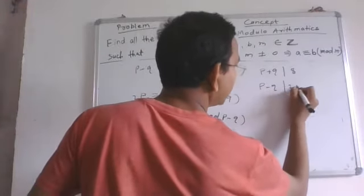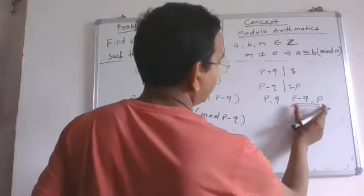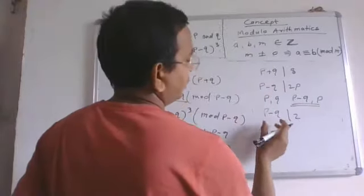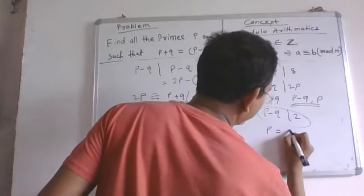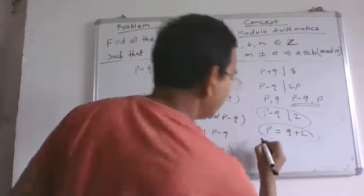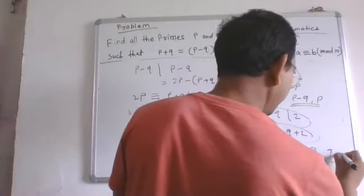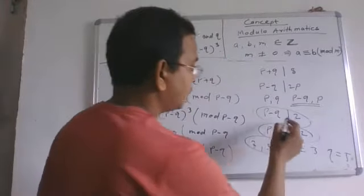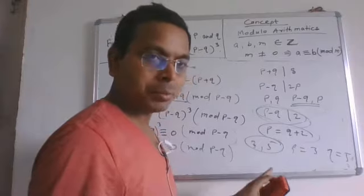Since p minus q divides 2p, and p and q are coprime — meaning p minus q and p are also coprime — p minus q cannot divide p, so p minus q must divide 2. We now have two results: p plus q divides 8, and p minus q divides 2. This means p equals q plus 2, so p and q are primes differing by 2. The only such prime pair is 3 and 5. Indeed, p plus q equals 8 satisfies our condition, confirming the answer: p equals 3 and q equals 5.